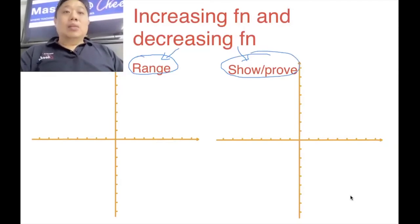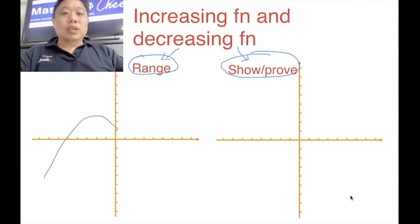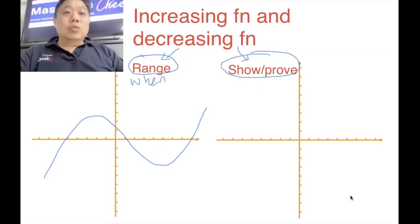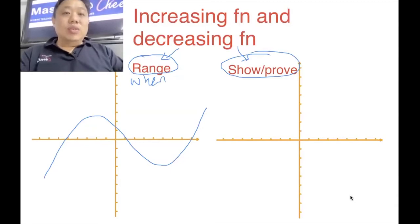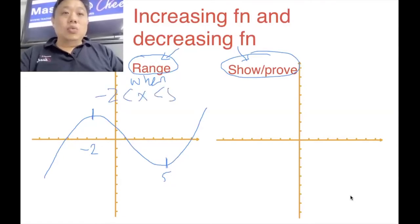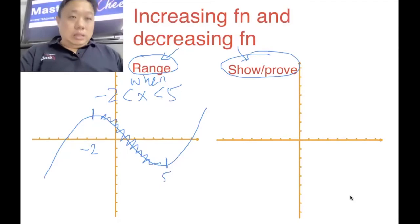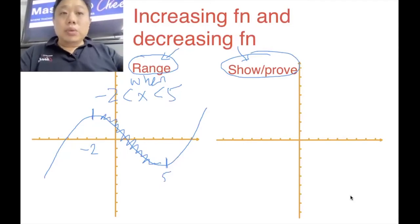If the question has the word 'range', it means that this graph behaves like a cubic graph, and 'range' is asking you: when is the graph decreasing? So when is the graph decreasing? We will say from this point to this point — if this point is minus two and this point is five, the graph is decreasing from minus two to five. This portion of the graph behaves in a going-down manner, so we call it the range question.